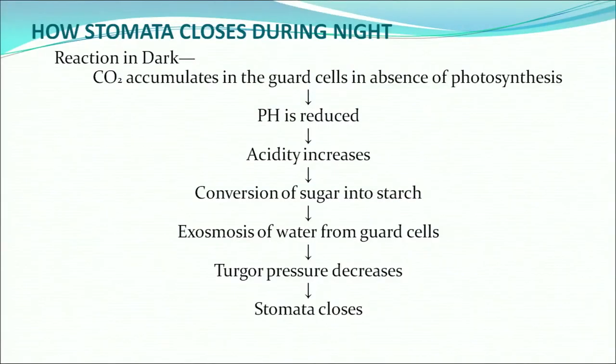In dark, CO₂ accumulates in guard cells in absence of photosynthesis. pH gets reduced and acidity increases. Sugar converts to starch, and by exosmosis, water moves out of the guard cells. Turgor pressure decreases, leading to the closing of stomata.